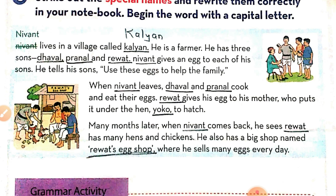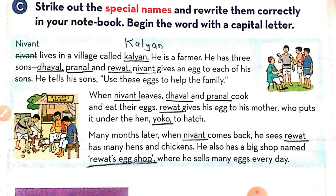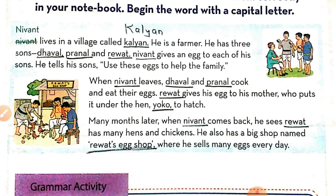'Nivant lives in a village called Kalyan.' Kalyan is the name of a village, so its first letter should be capital — underline the word Kalyan and rewrite it. He is a farmer who has three sons: Dhaval, Pranal, and Revat. Nivant gives an egg to each of his sons and tells them: 'Use these eggs to help the family.'